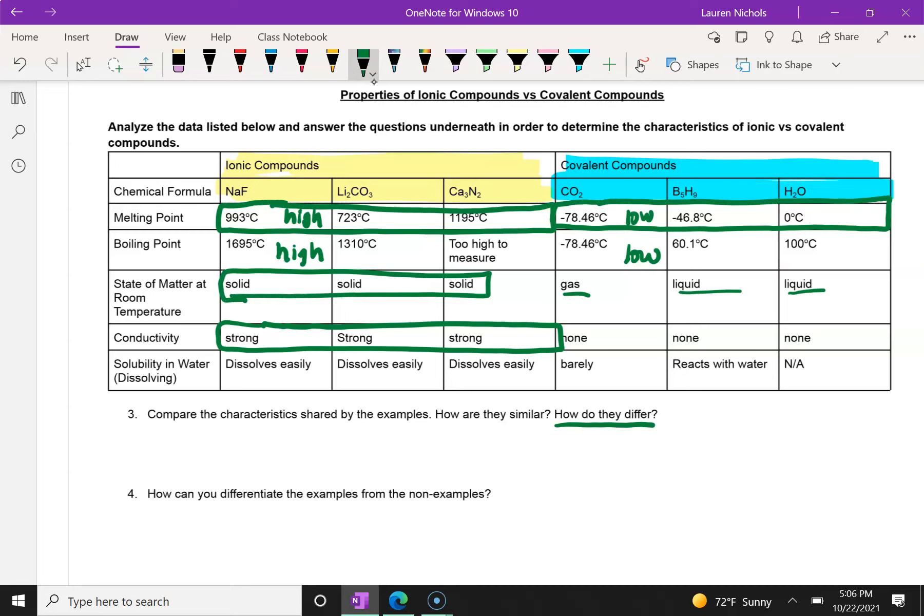However, the ionic compounds properties, we can have high melting points and boiling points, which is abbreviated as MP and BP. They're solid, they're good conductors, and they dissolve in water. Notice a lot of those properties, the high melting point and boiling point, solid at room temperature, good conductors, those are properties of metals, and ionic compounds contain a metal.